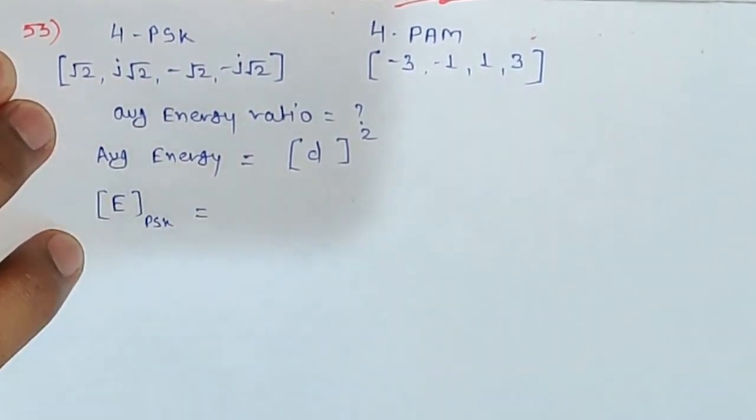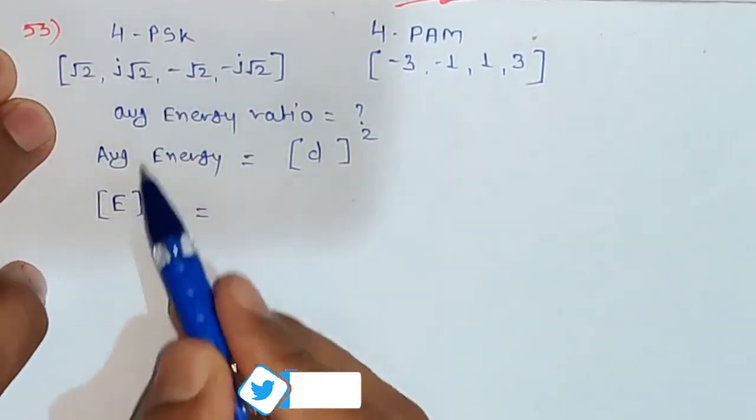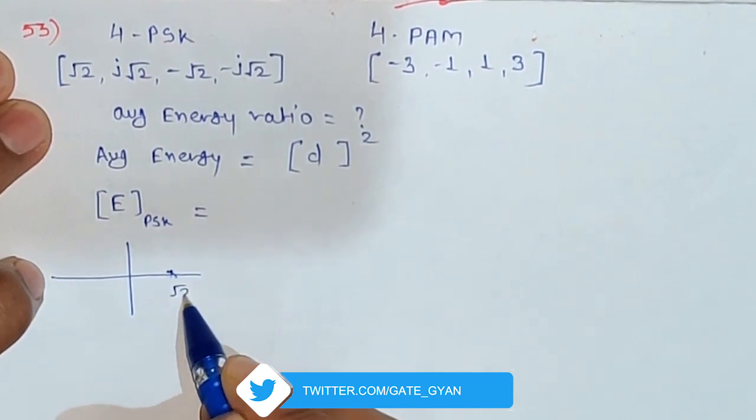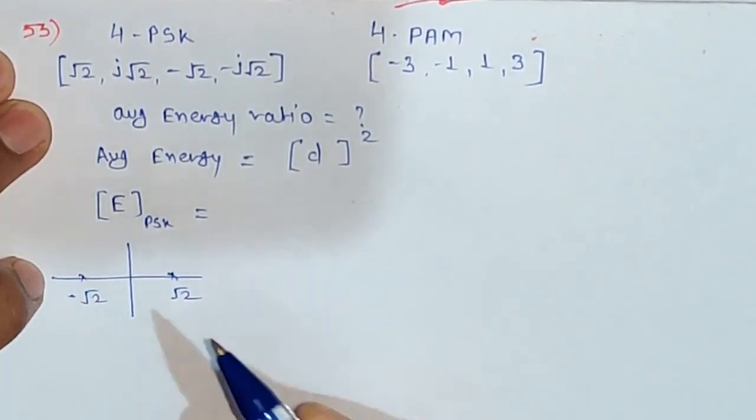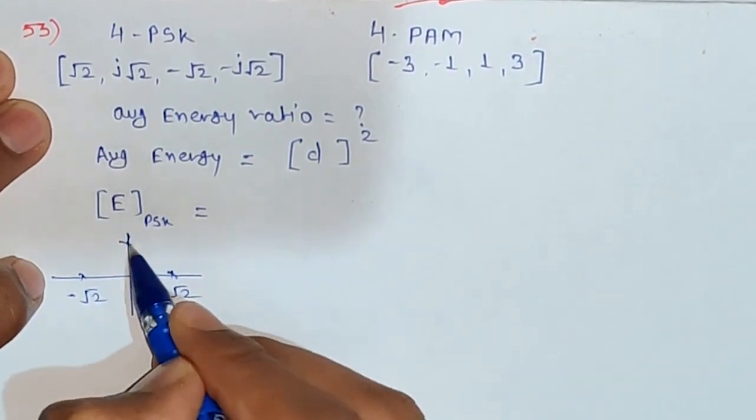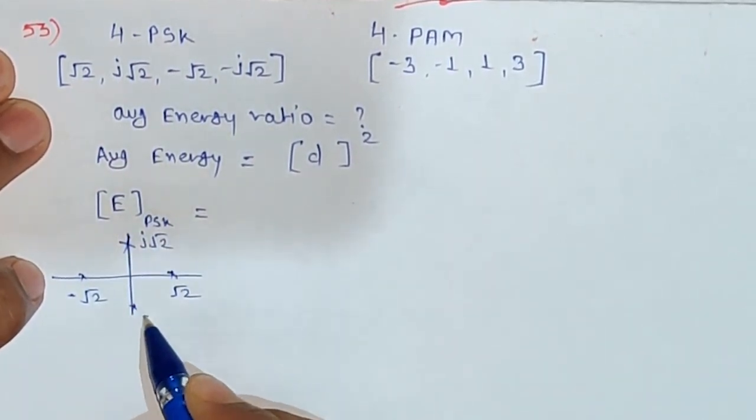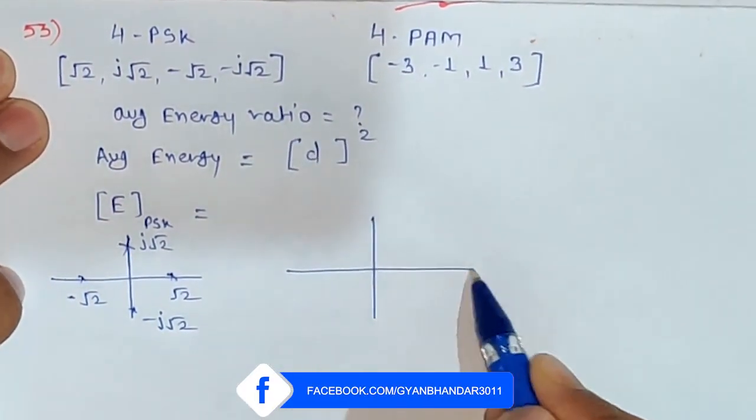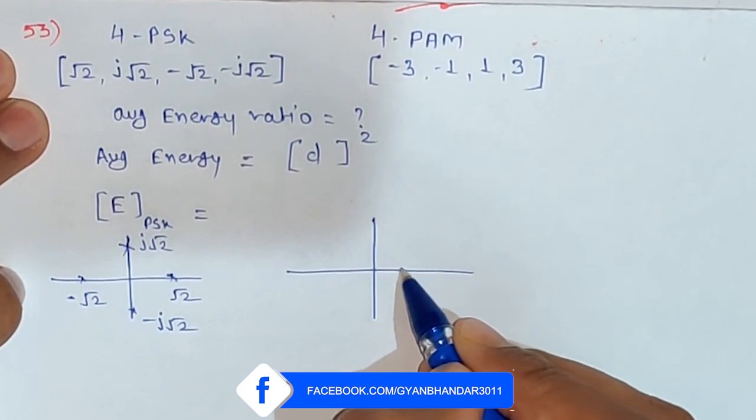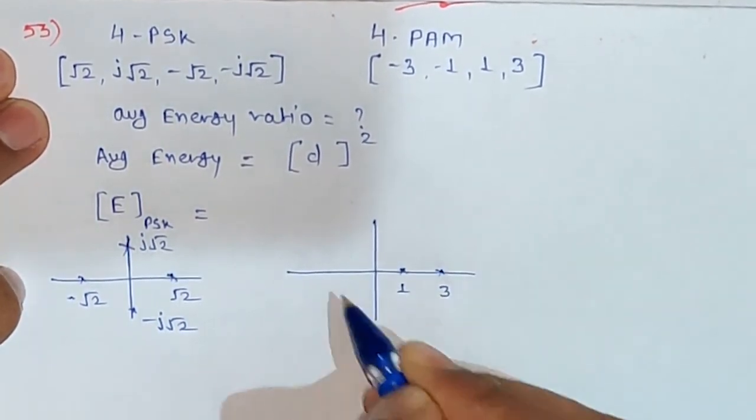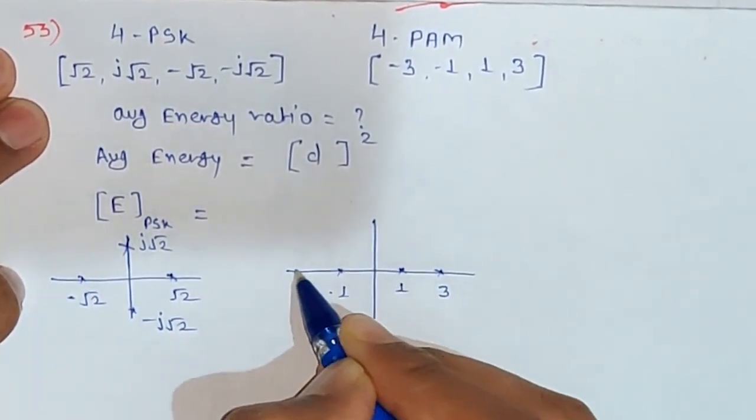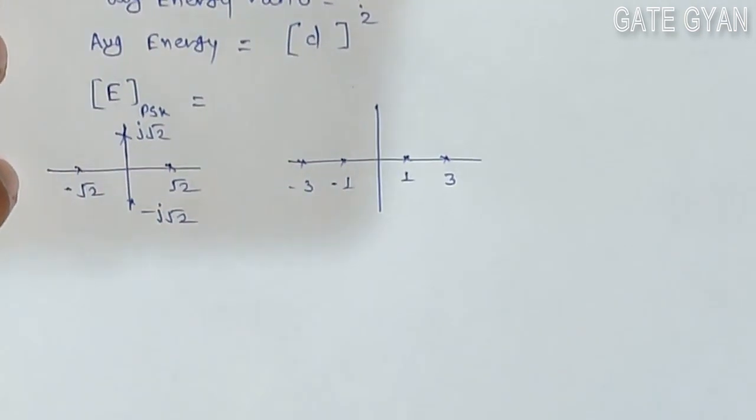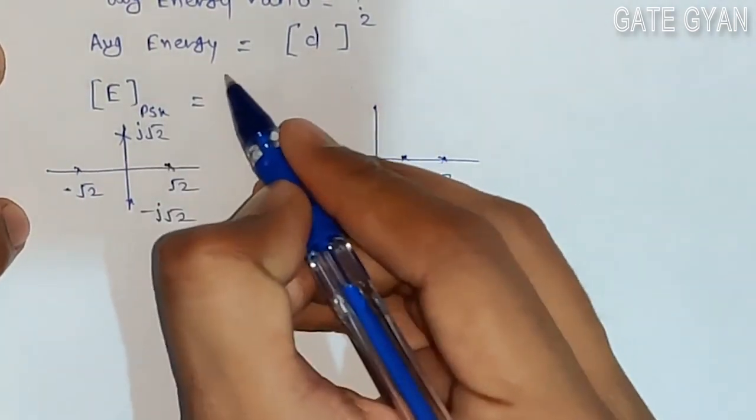For PSK, the constellation points given are √2, -√2, j√2, and -j√2. This is 4-PSK. For 4-PAM, the points given are 1, 3, -1, and -3. So these are the two constellation diagrams, and we have been asked to find out the average energy.